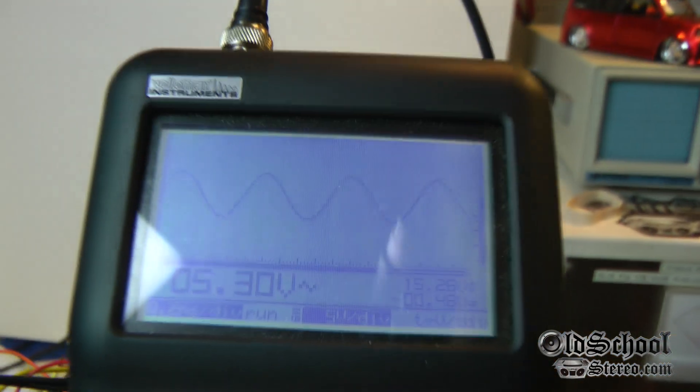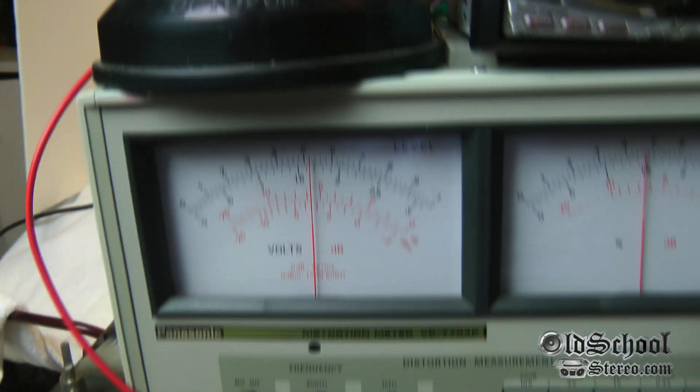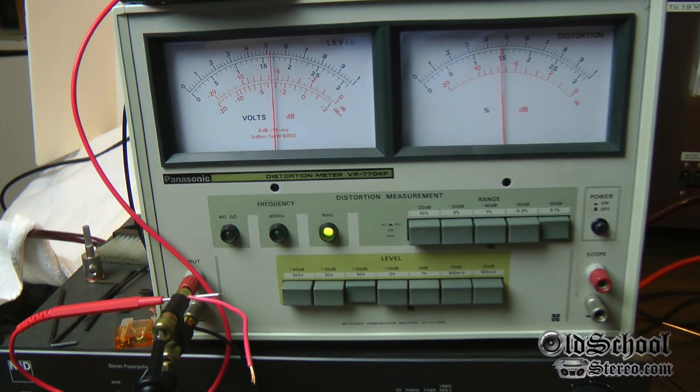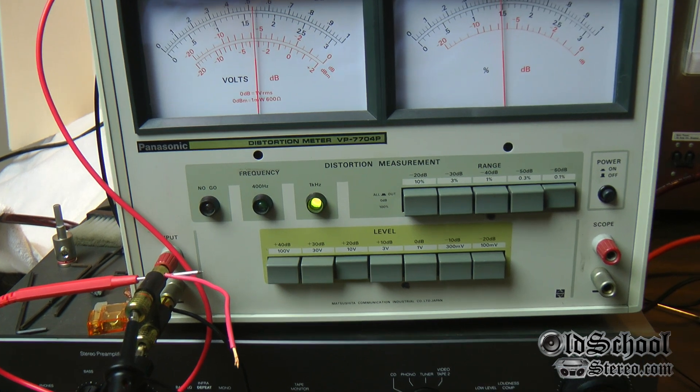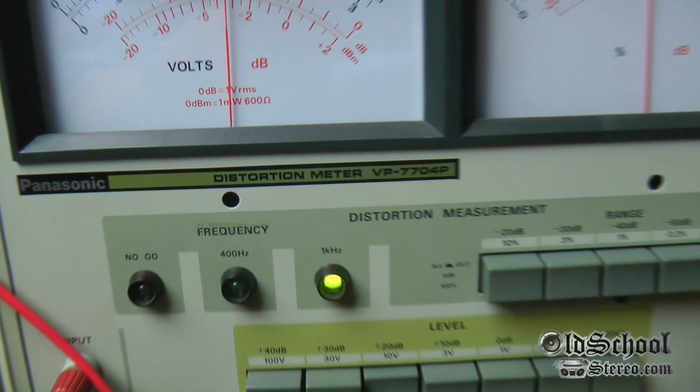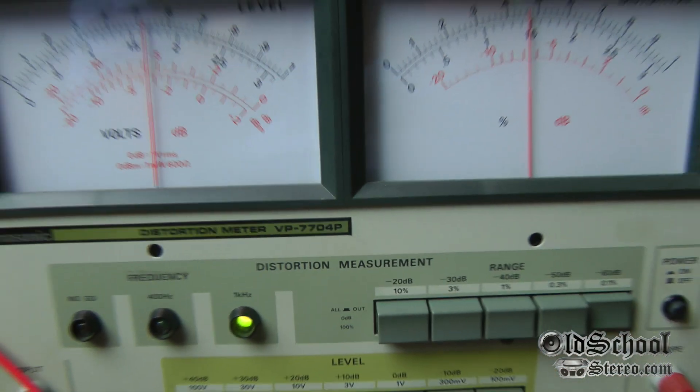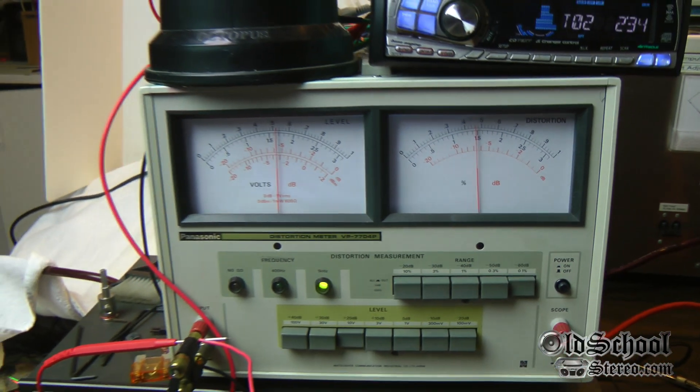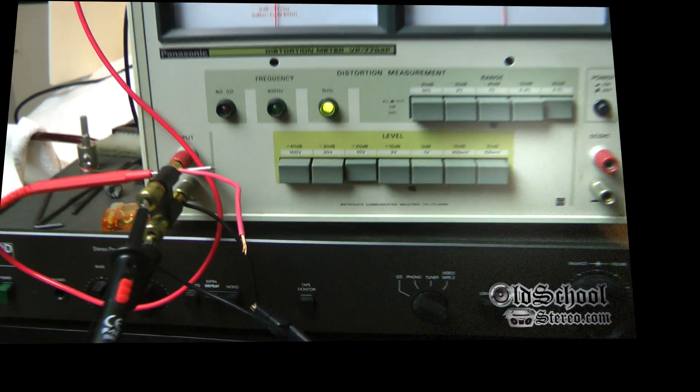So this is the newest test device here on the Old School Stereo test bench, the Panasonic distortion meter VP7704P. This is Big D Whiz, more stuff coming to you soon. Until next time, I'm out of here.